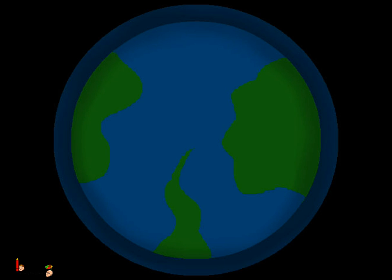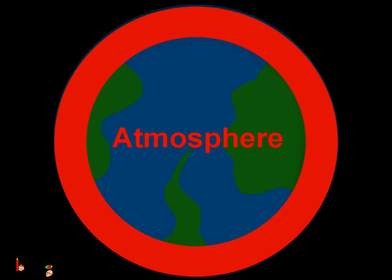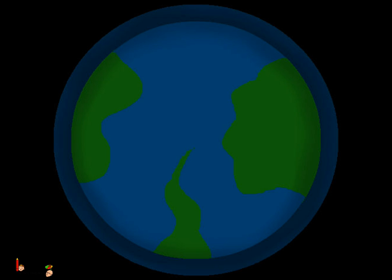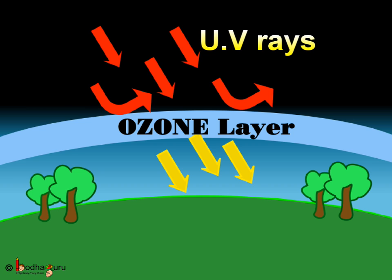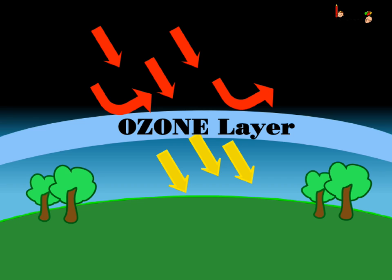The earth is wrapped in a blanket of air called the atmosphere, which is made up of several layers. About 19 to 30 kilometers above the earth is a layer of gas called ozone, which is a form of oxygen. Ozone is produced naturally in the atmosphere. Almost all of the harmful ultraviolet rays coming from the sun, i.e. UV radiation, are absorbed by this layer of ozone gas 20 to 50 kilometers above the earth. Hence, the ozone layer is very important because it stops the harmful sun's rays from getting through to the earth. This can cause skin cancer and can also harm all the plants and animals.